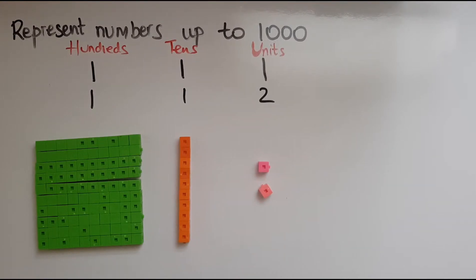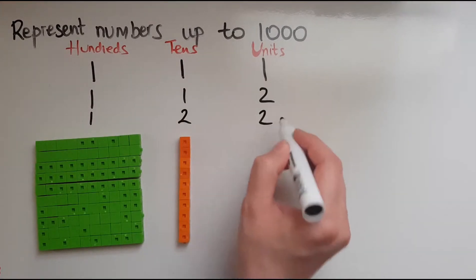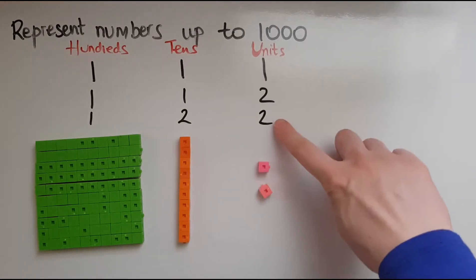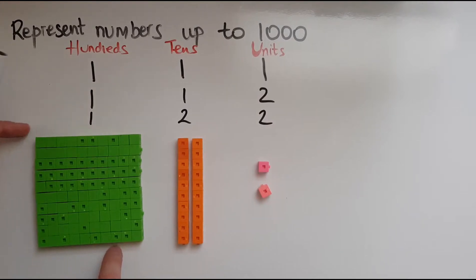If I want to represent 122, that shows there are 2 units but need to be 2 blocks of 10. So there is 1 and another 1, 2 and here is a block of 100.